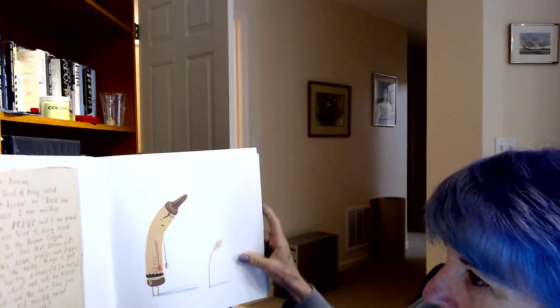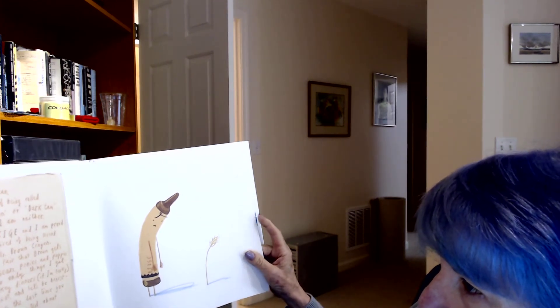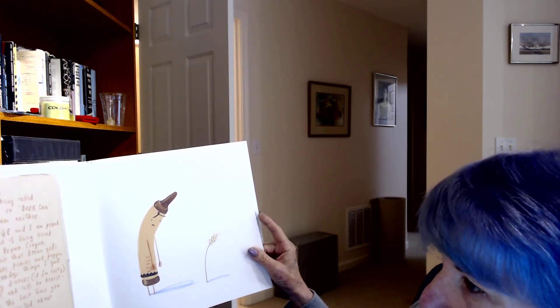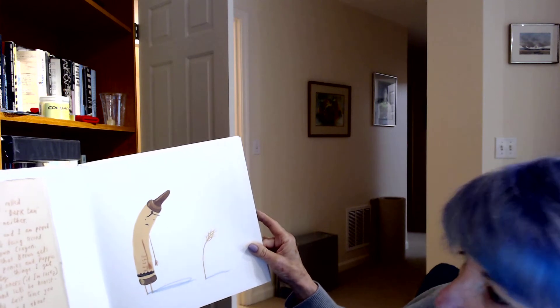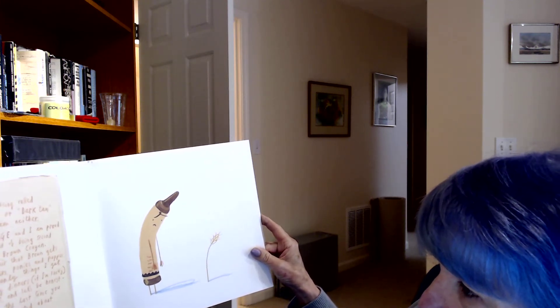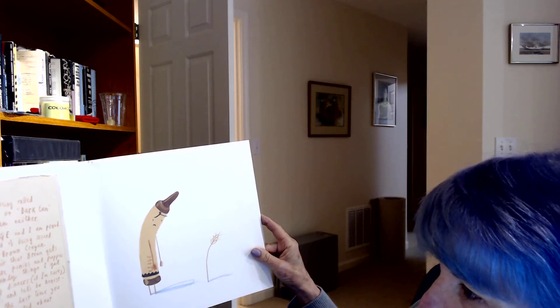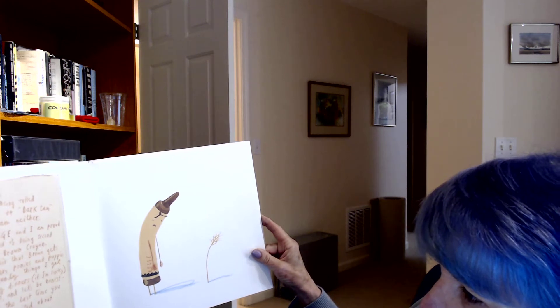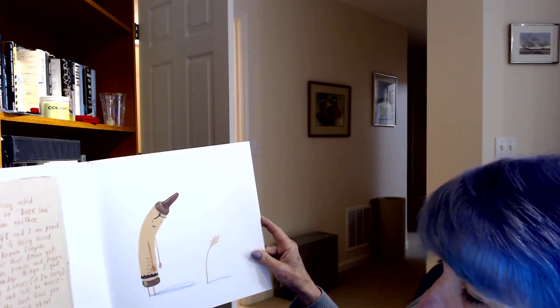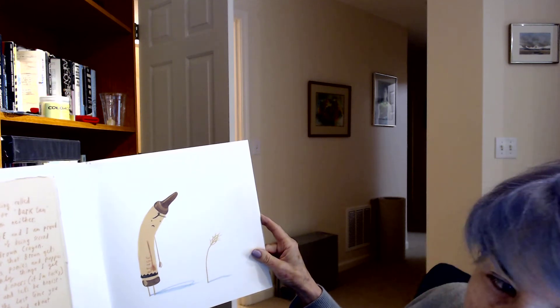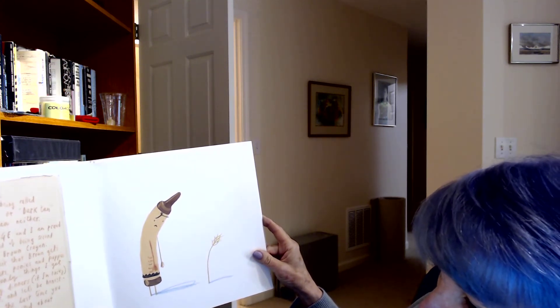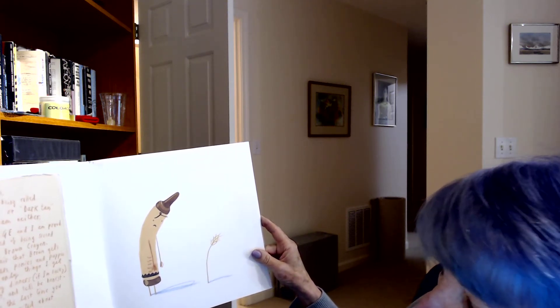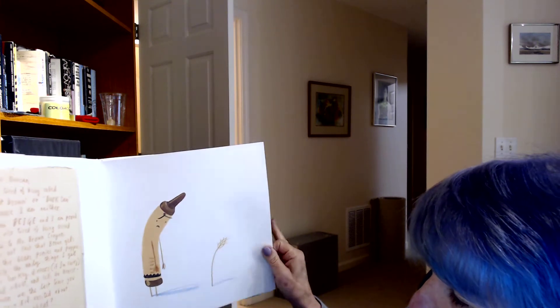Dear Duncan, I'm tired of being light brown or dark tan because I am neither. I am beige and I am proud. I am also tired of being second place to Mr. Brown Crayon. It's not fair that brown gets all the bears, ponies, and puppies, while the only thing I get are turkey dinners, if I'm lucky, and wheat. And let's be honest, when was the last time you saw a kid excited about coloring wheat? Your beige friend, beige crayon. Poor guy.